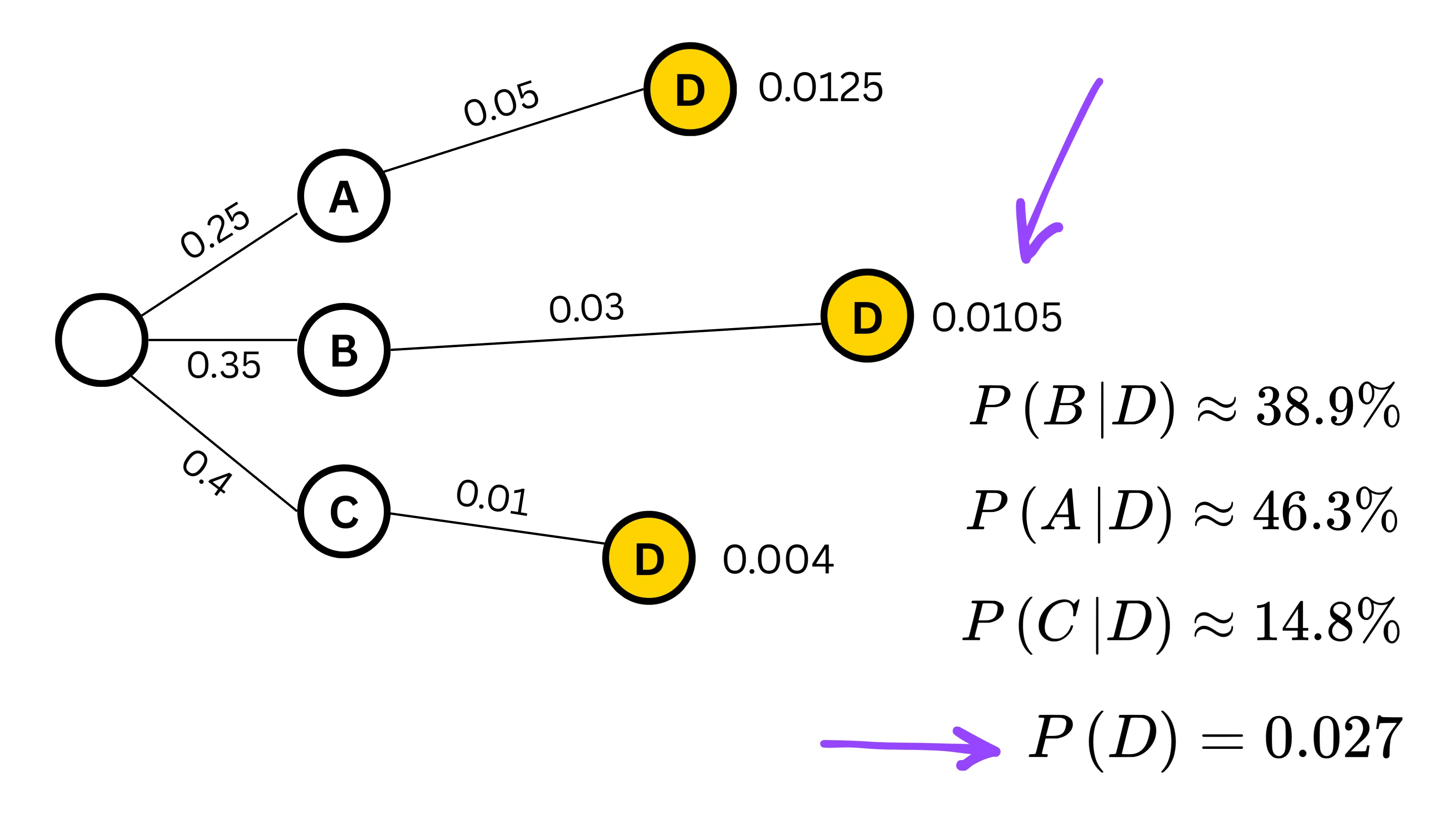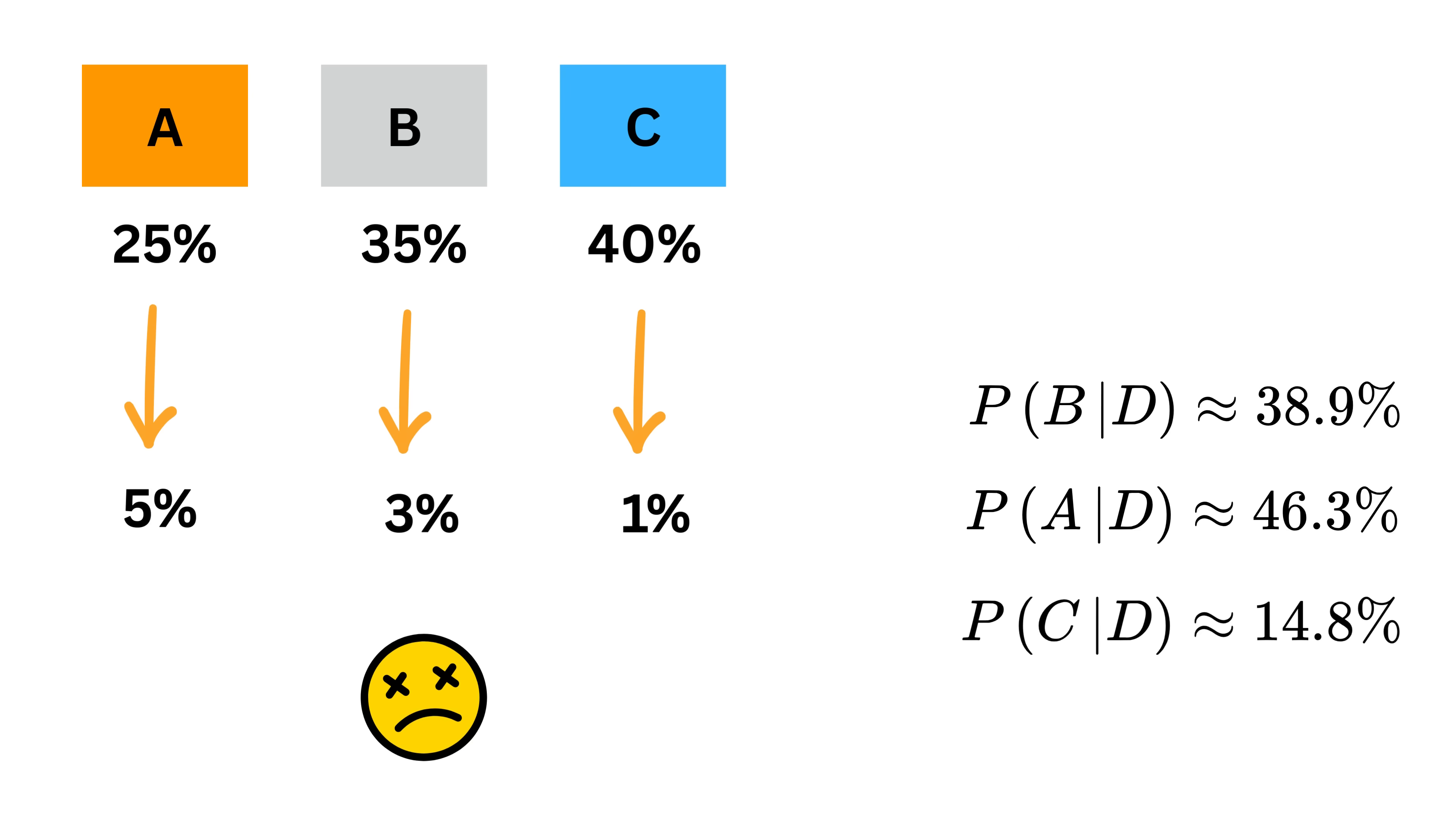So, after updating our beliefs, we see that even though C makes the largest share of items overall, a defective item is most likely to have come from A, followed by B, and least likely from C. This is because machine A makes fewer items than C, but its defect rate is much higher, so it ends up adding more defective pieces than C.